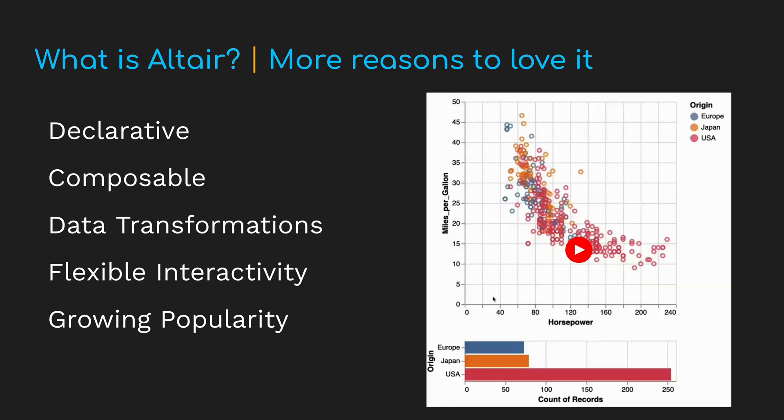There are lots of reasons to love Altair. Its API is declarative, so you spend your focus on how data should be mapped to various elements of your chart rather than writing lots of imperative code to build up a chart step by step. Its API is composable — the individual concepts you learn can be freely combined to build up sophisticated charts from simple components. Altair also includes built-in support for data transformations, which reduces the need to jump back and forth between pandas and your charting library to iterate on visualizations.